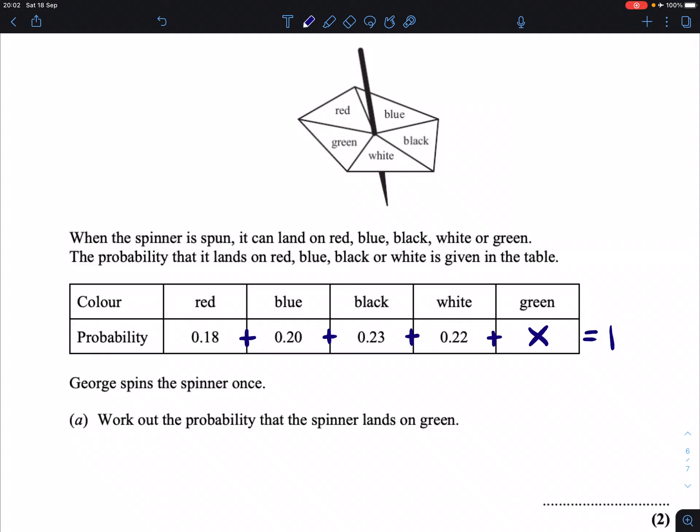So what that means is if we add together all the probabilities of red, blue, black, and white and get a total, what is missing to add to get to 1 is going to be our probability for green. So we would take 0.18, add 0.20 plus 0.23 plus 0.22. That's going to give us 0.83, and then we take that away from 1, which will give us 0.17. So that's the probability of the spinner landing on green.